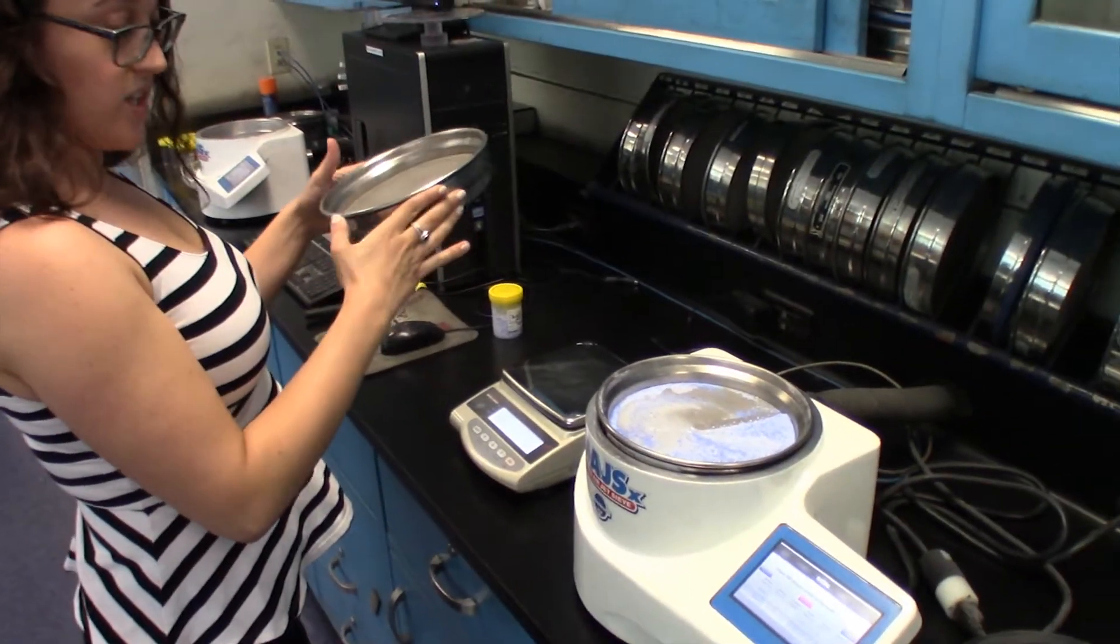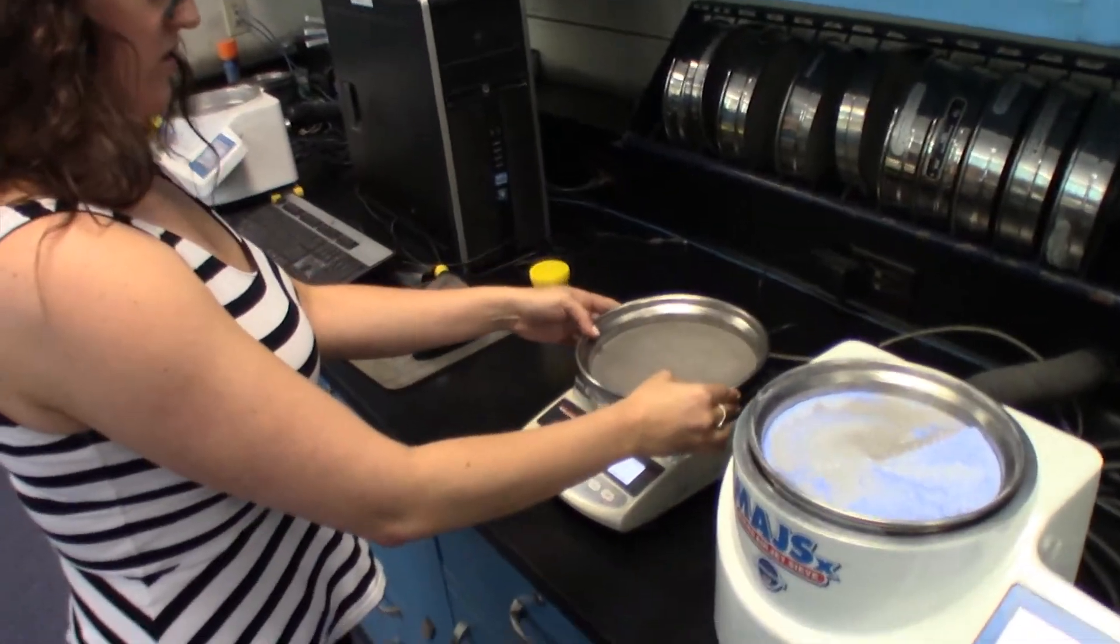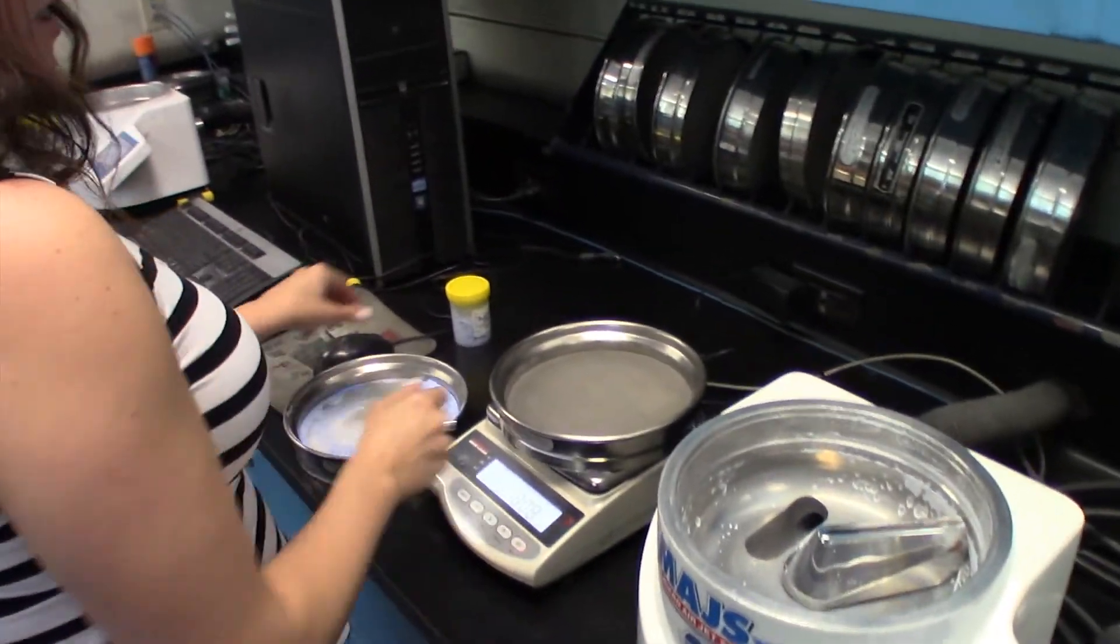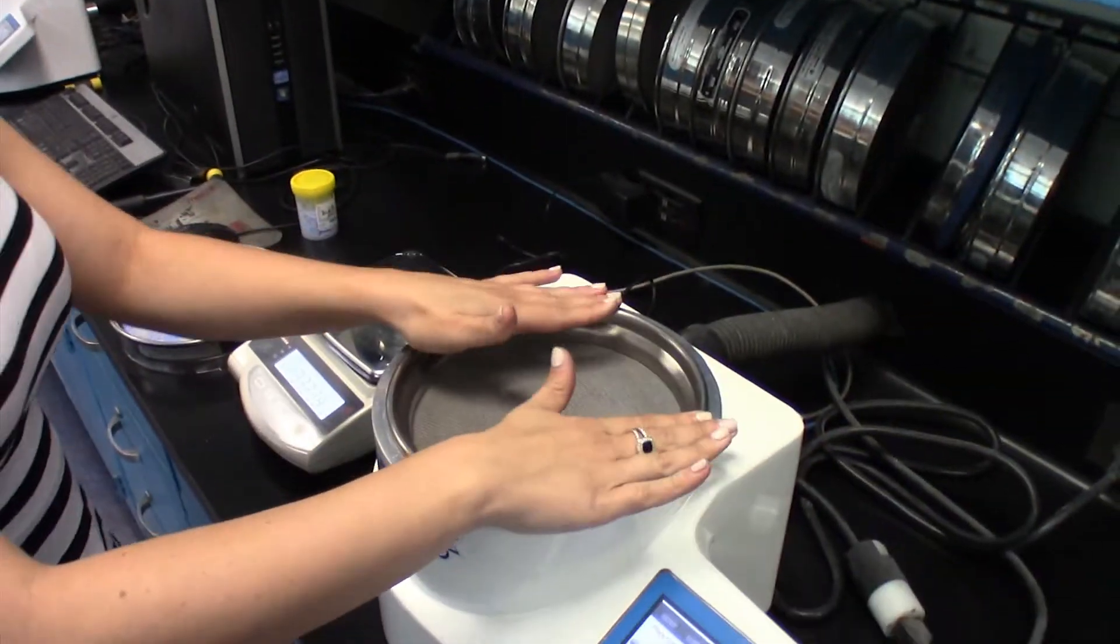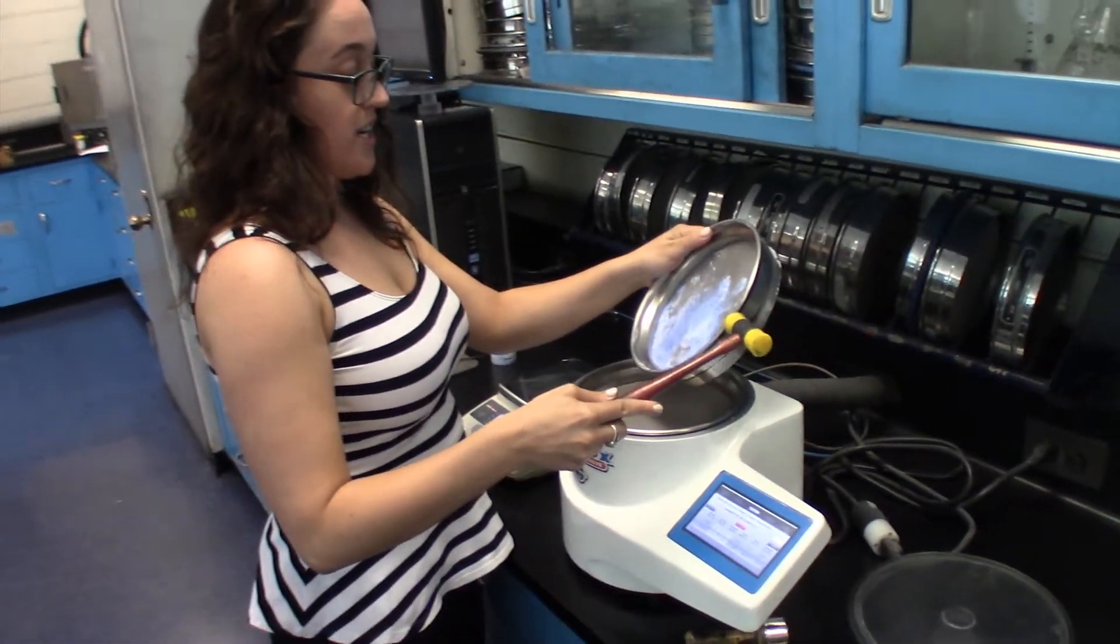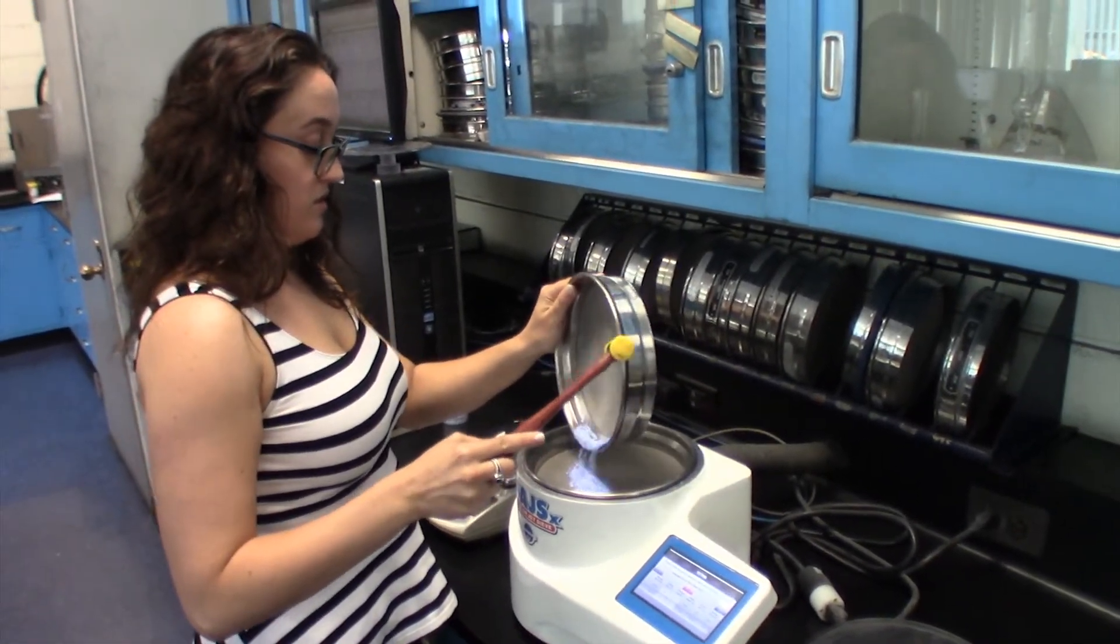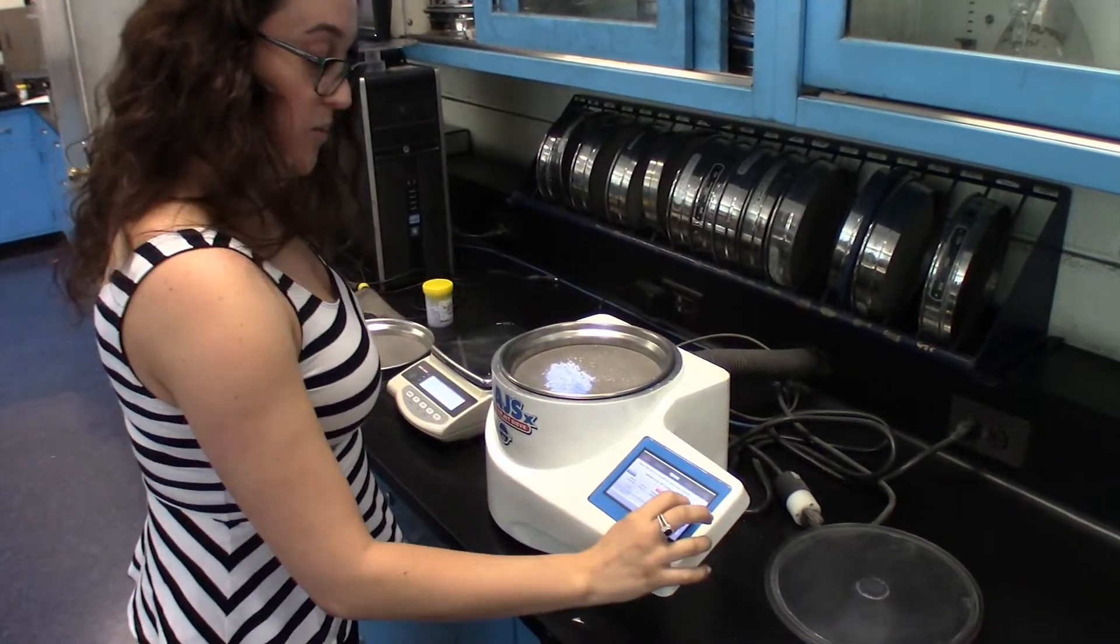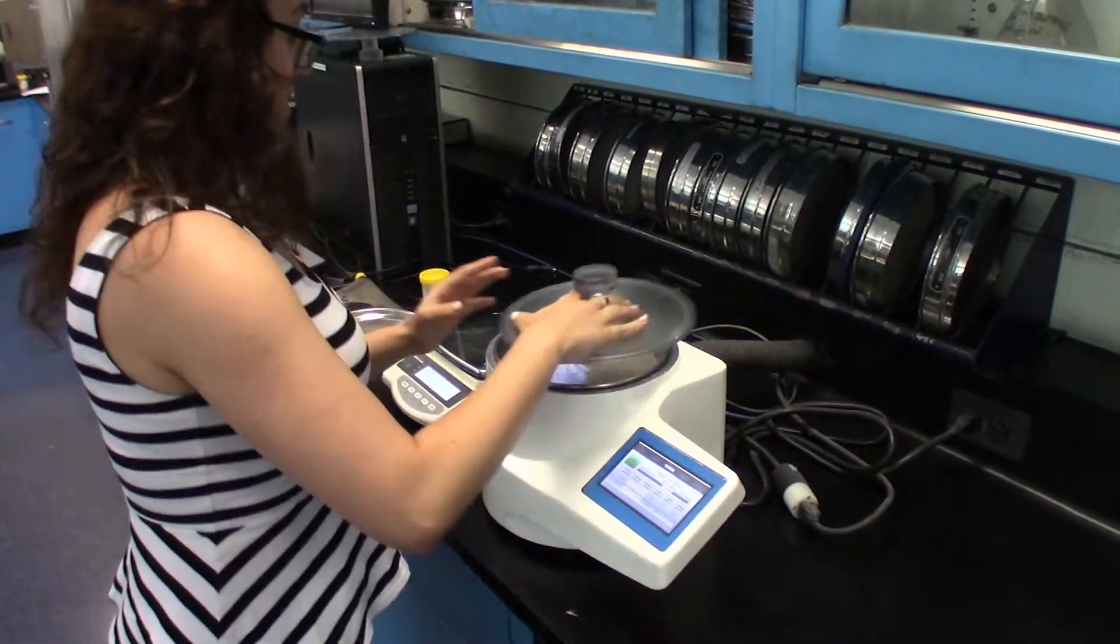We're going to weigh the next sieve screen, the 500 micron sieve screen. Press next. We'll place the 500 sieve screen on the sieve and we will transfer the retained sample. And we will press next and then start again.